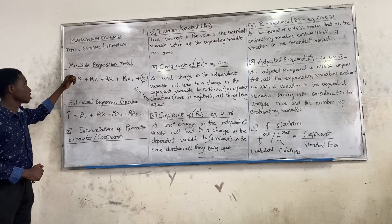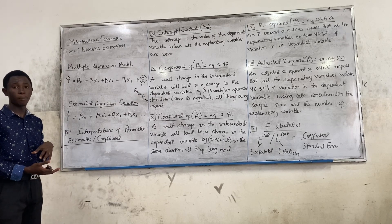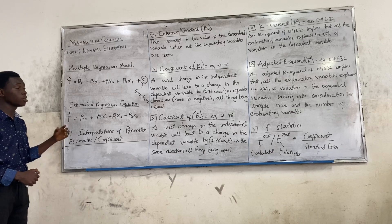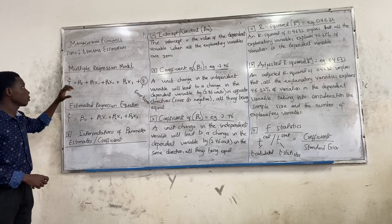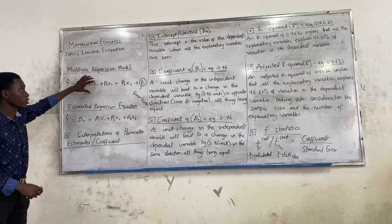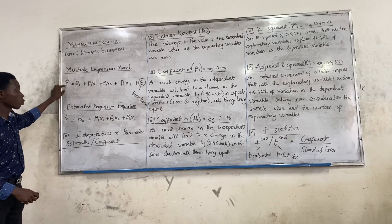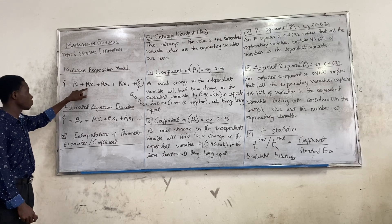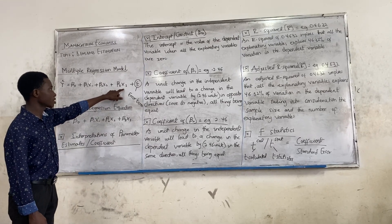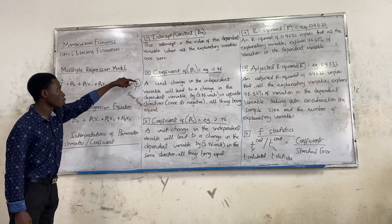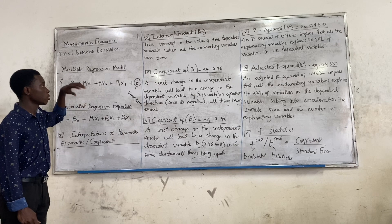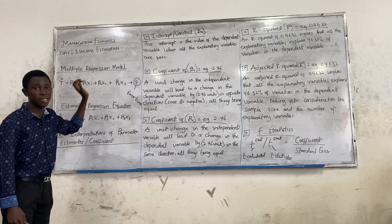With demand estimation, we have a multiple regression model and also a simple regression model. But with the simple regression model, we don't mostly use it. We mostly use the multiple regression model. So there's the multiple regression model: Y₀ is equal to β₀ plus b₁x₁ plus b₂x₂ plus b₃x₃, plus what we call the error term, meaning that all other variables or factors are affecting demand but are not present.